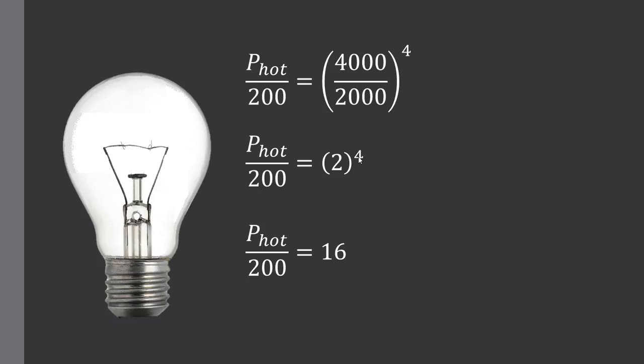So to find the hot power rating at 4000 Kelvin we simply multiply our 200 across the right hand side with the 16, and we come out with an answer of 3200 watts. So at 2000 Kelvin we have a power rating of 200 watts. Whereas at 4000 Kelvin, double the original temperature, our watts have skyrocketed up to 3200. And that is because of this raised to the power of 4.